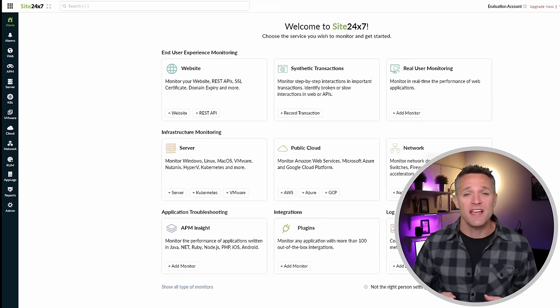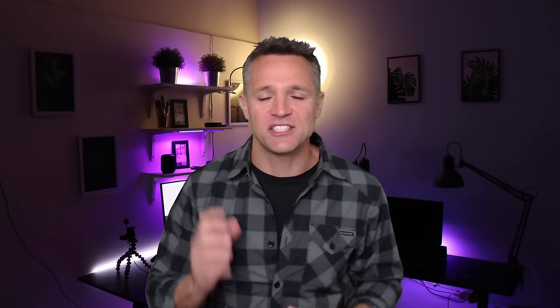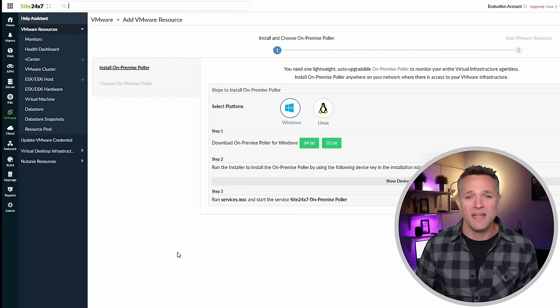The first bit of infrastructure we're going to set monitoring up on is VMware vSphere. Click on VMware on the left-hand side. Site24x7 has all their servers up in the cloud, so we're simply going to be installing a Poller on a Windows VM within our environment. That Poller is responsible for collecting metrics from our vSphere environment and uploading them into the Site24x7 servers. From there, we'll be able to read all the metrics in the portal.